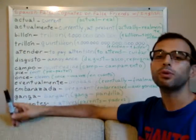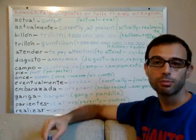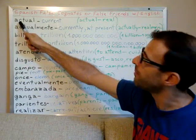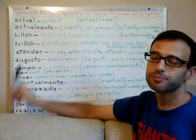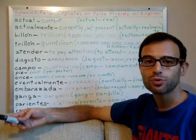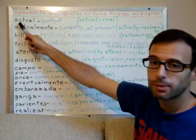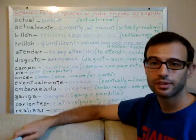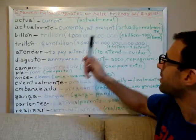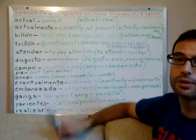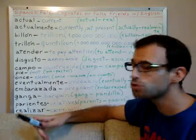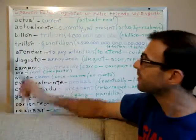We will begin with the most used false friends. The word 'actual' — the Spanish word 'actual' is identical to the English word 'actual.' However, 'actual' in Spanish means 'current,' while the English word 'actual' translates into Spanish as 'real.' So the English word 'actual' is 'real' in Spanish, and the Spanish word 'actual' in English means 'current' or 'present.'